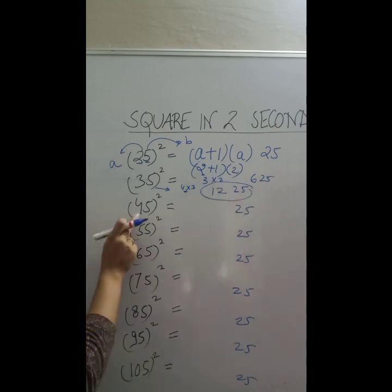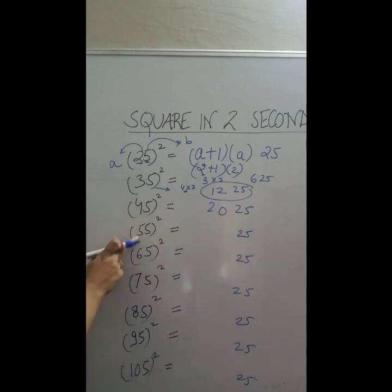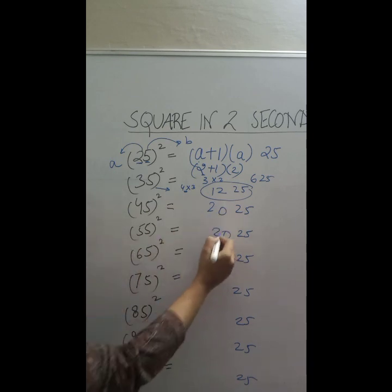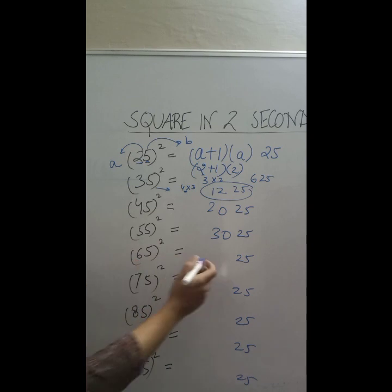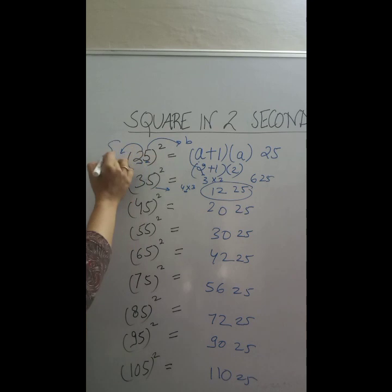4 into 5 is 2025. 5 into 6 is 3025. 6 into 7 is 4225. 7 into 8 is 5625. 8 into 9 is 7225. 9 into 10 is 9025. And 10 into 10, so just in 2 seconds you have been able to find out the square of these numbers.